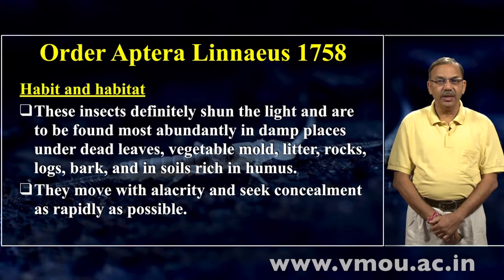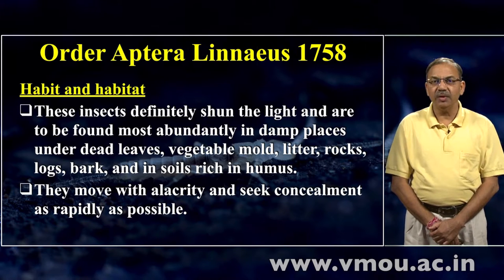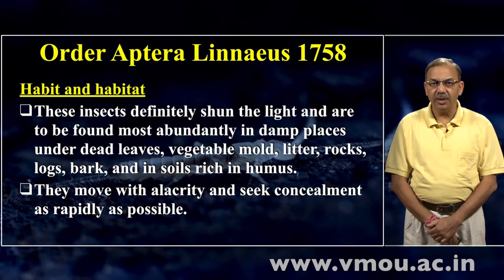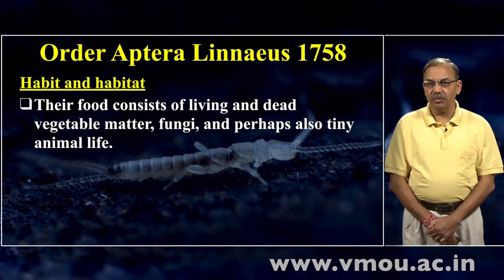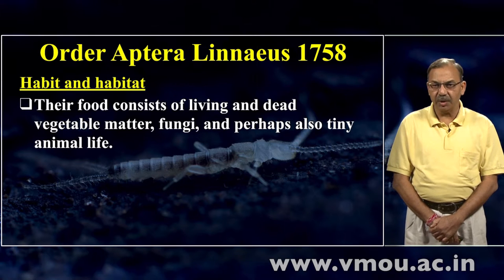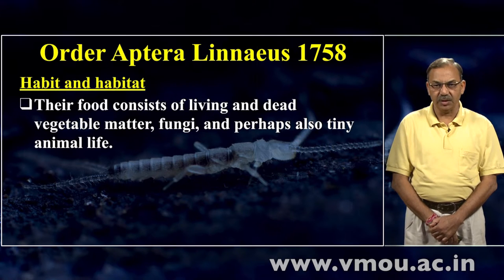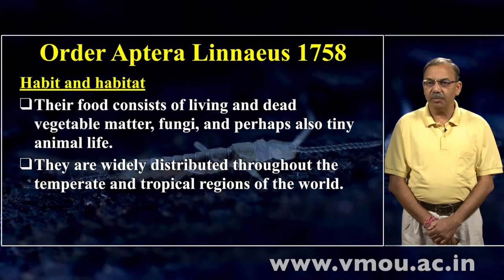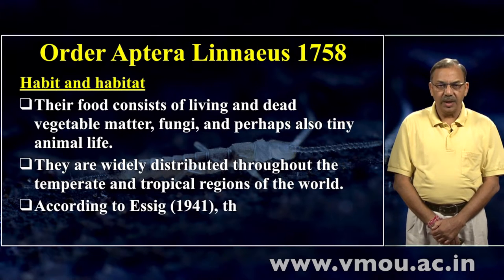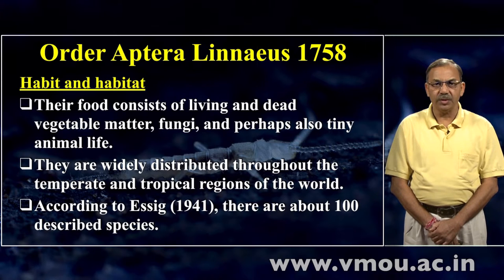ये काफी alertness के साथ move करते हैं और seek concealment — जितनी तेजी से किसी छुपने वाले स्थान में घुस जाते हैं। इनका भोजन living और dead vegetable matter, fungi, और शायद बहुत बारीक जानवरों की life भी इनके भोजन में शामिल होती है। They are widely distributed throughout the temperate and tropical regions of the world — विश्व के सभी temperate और tropical regions में ये पाये जाते हैं। Asic 1941 के अनुसार इस order Aptera में लगभग 100 described species हैं।